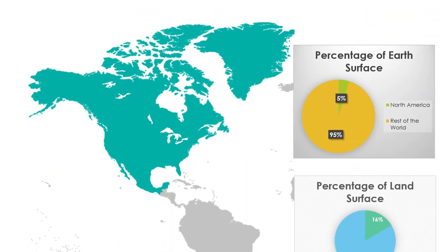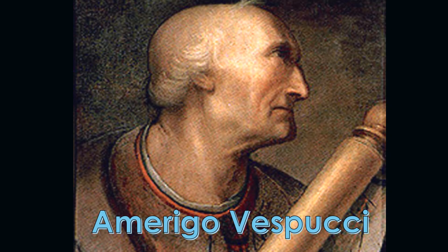North America is the third largest continent with over 24 million square kilometers and covers 5% of the total earth surface, 16.5% of the land. America is named after an Italian explorer Amerigo Vespucci. He brought forth a revolutionary concept that the lands Christopher Columbus discovered was not part of the West Indies but a separate continent.